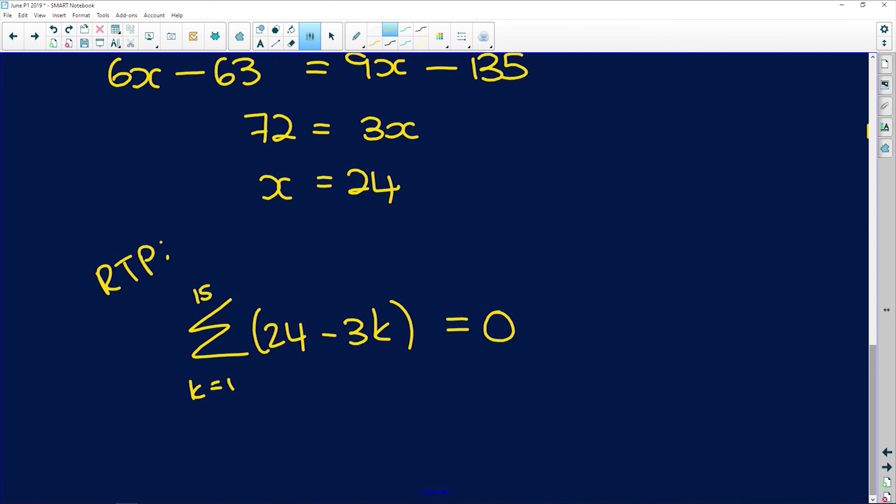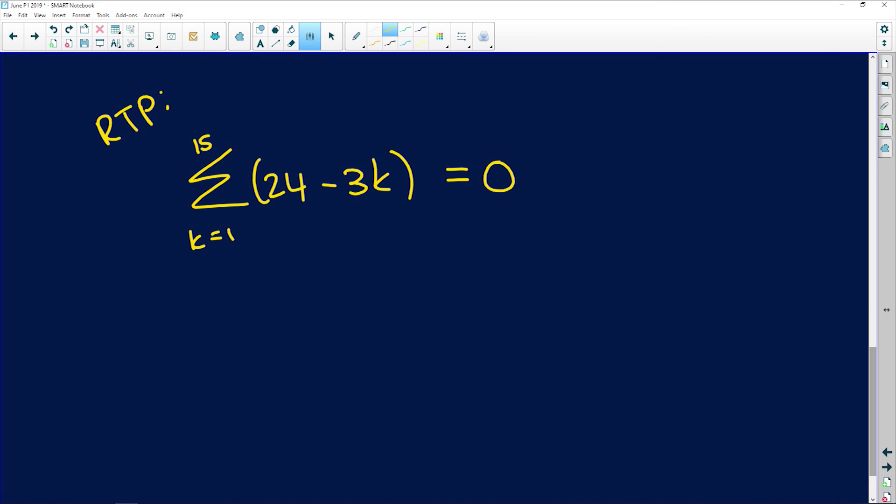And remember we've just found that x is 24. So now we do the same thing, we use the sum formula. So Sn is equal to n divided by 2, which is 15 over 2.